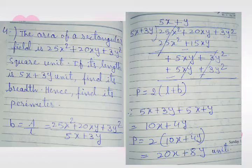We multiply 5x plus 3y with 5x and get 25x squared plus 15xy. After changing the sign of the last line, the first term is cancelled, and after solving the second term we get plus 5xy plus 3y squared.